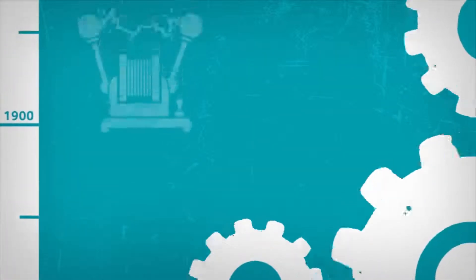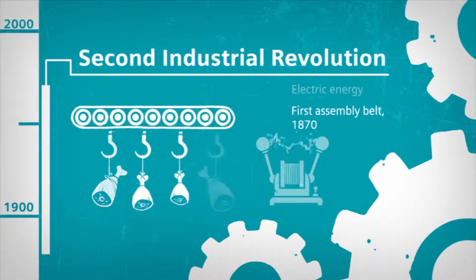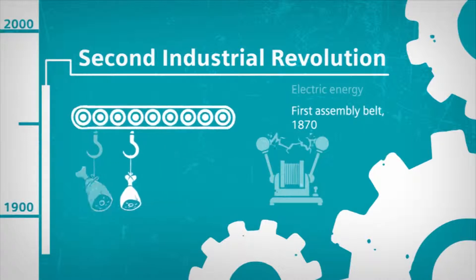The late 19th century saw the rise of electrical engineering and mass production. The first moving belt conveyor was used as long ago as 1870 in the slaughterhouses of Cincinnati, Ohio.